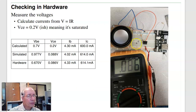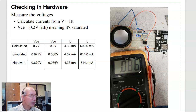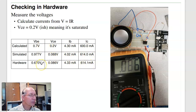If I change beta to 300, the transistor saturates. In hardware, I tie the base resistor to 5 V or 0 V. When tied to 5 V, the voltage at the collector is 0.086 V — close to zero, confirming saturation. Again, calculated, simulated, and hardware results differ: I assumed 0.2 V, simulation (with beta = 300) shows saturation, hardware gives 0.086 V. This is the actual answer. Everything looks good: base current, collector current, and VBE all check out.